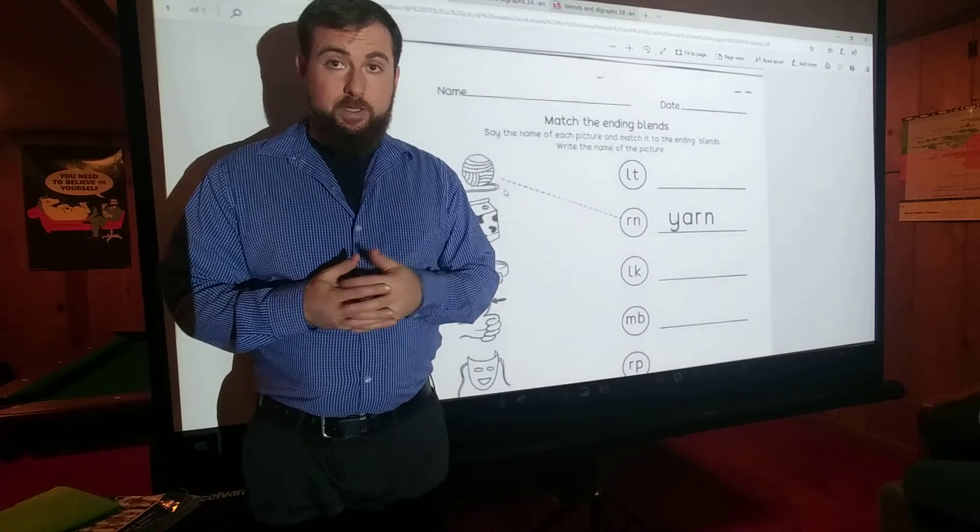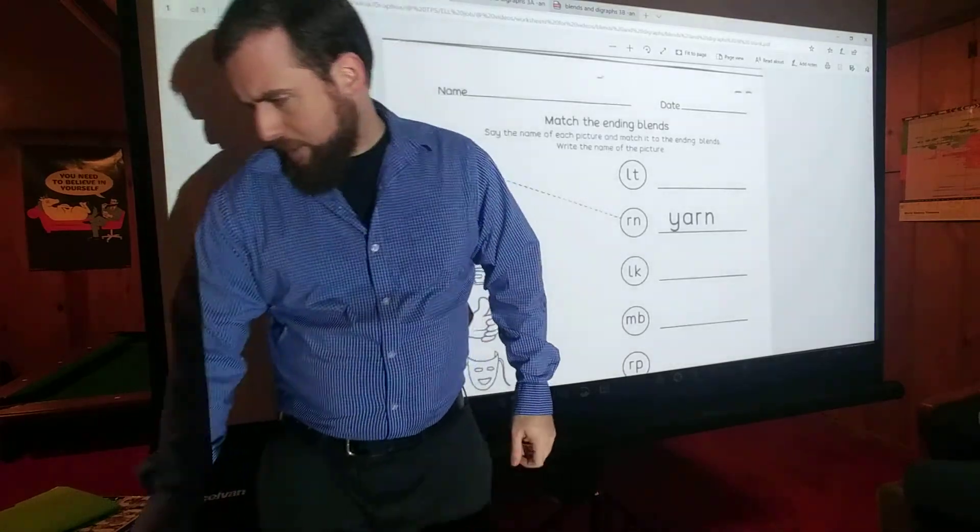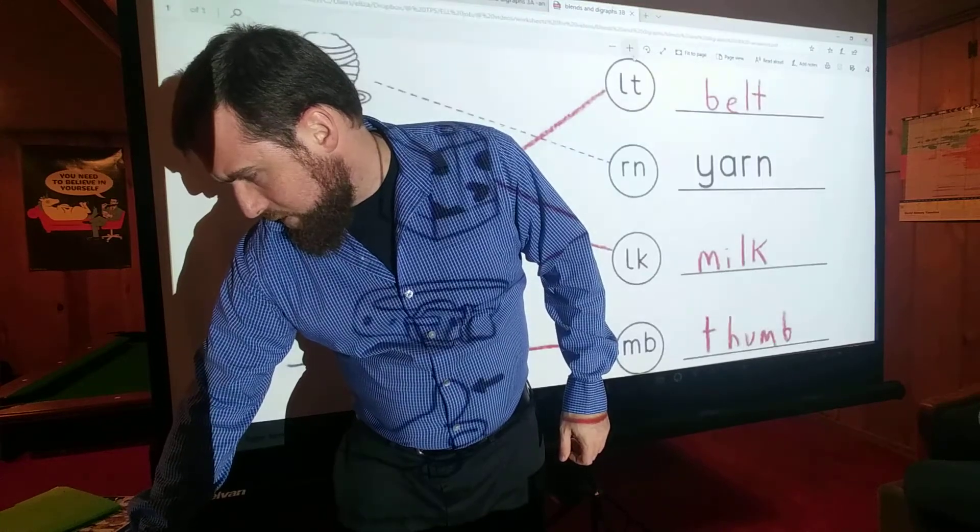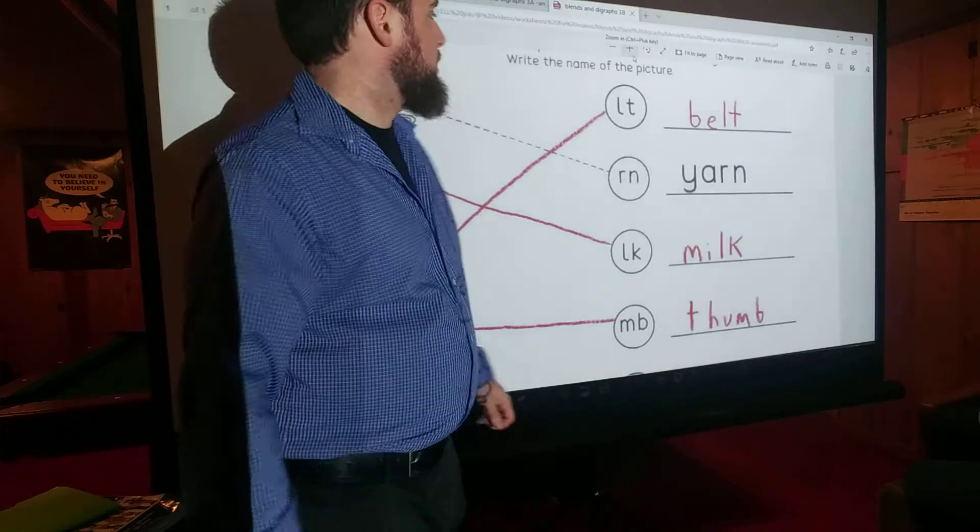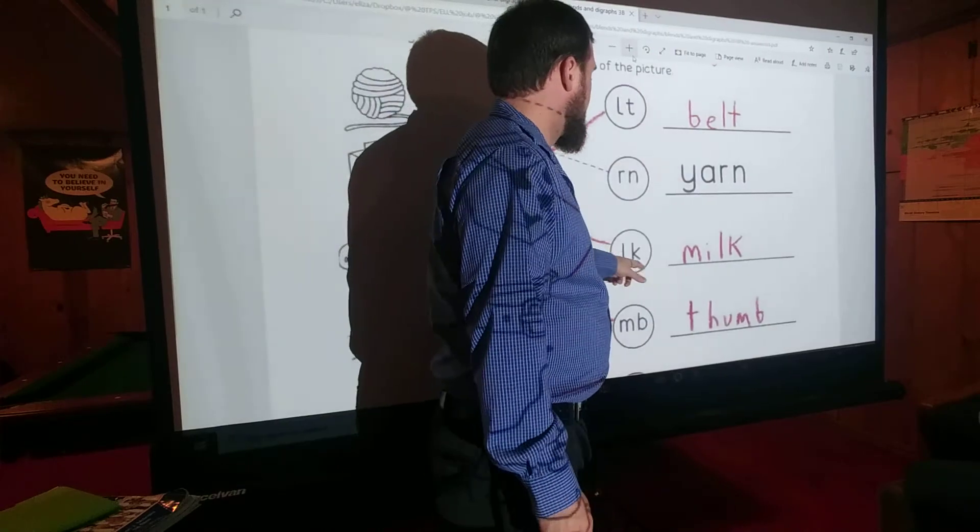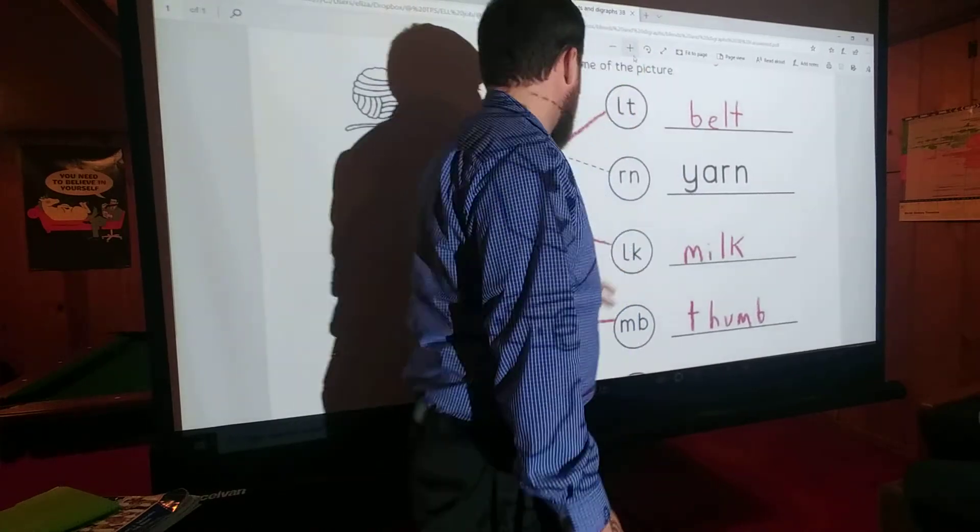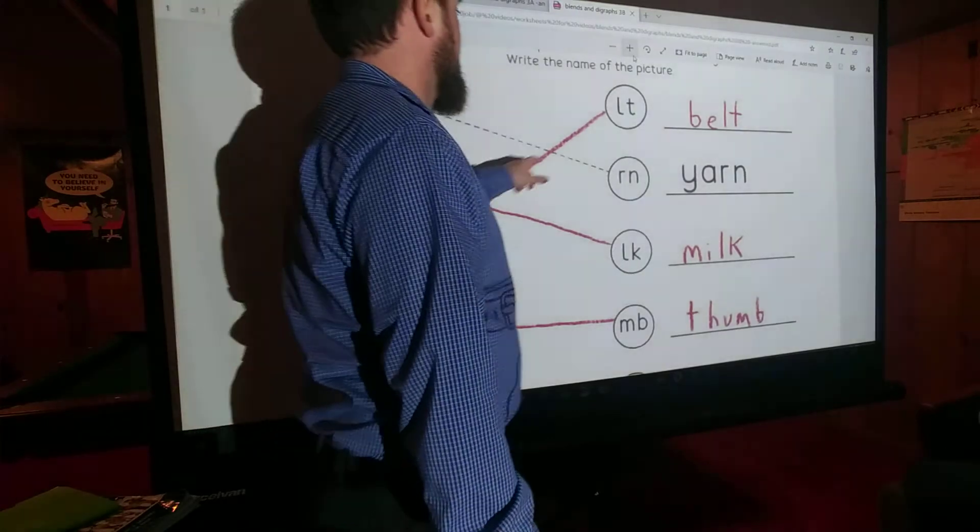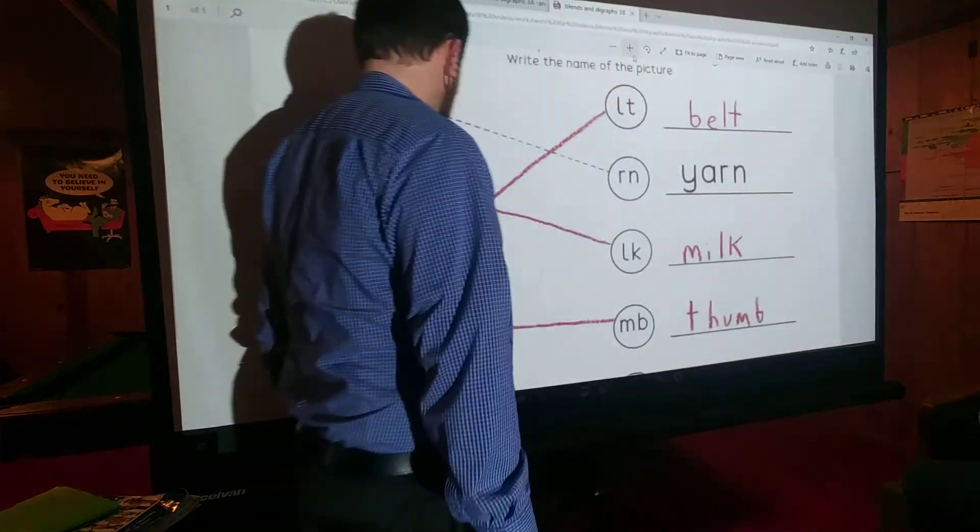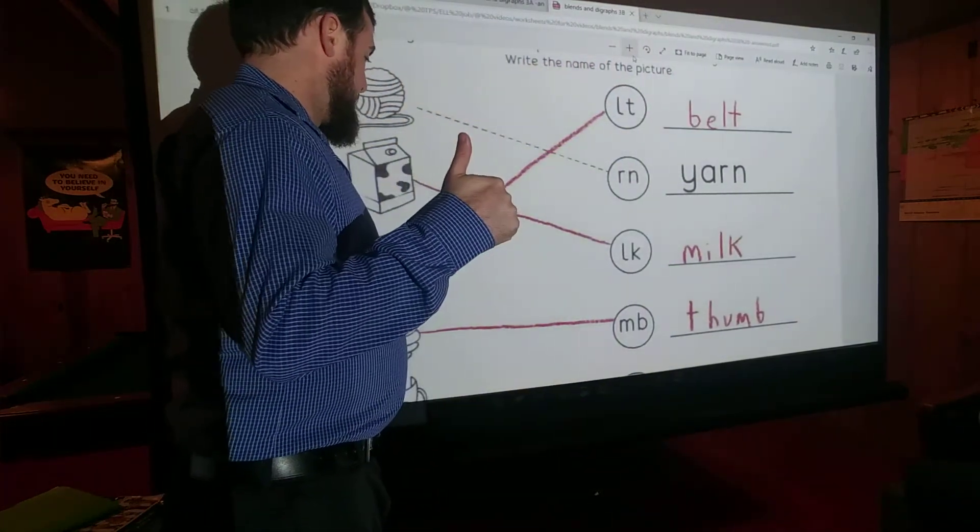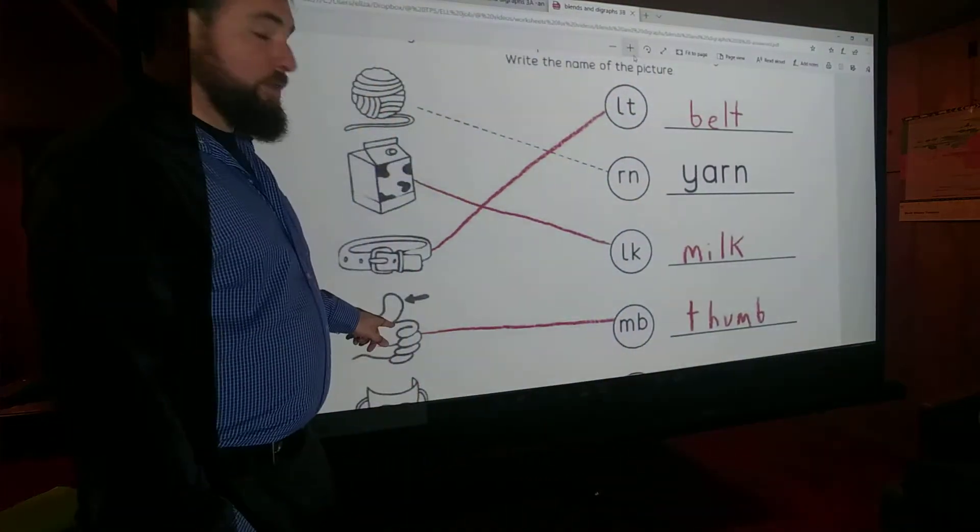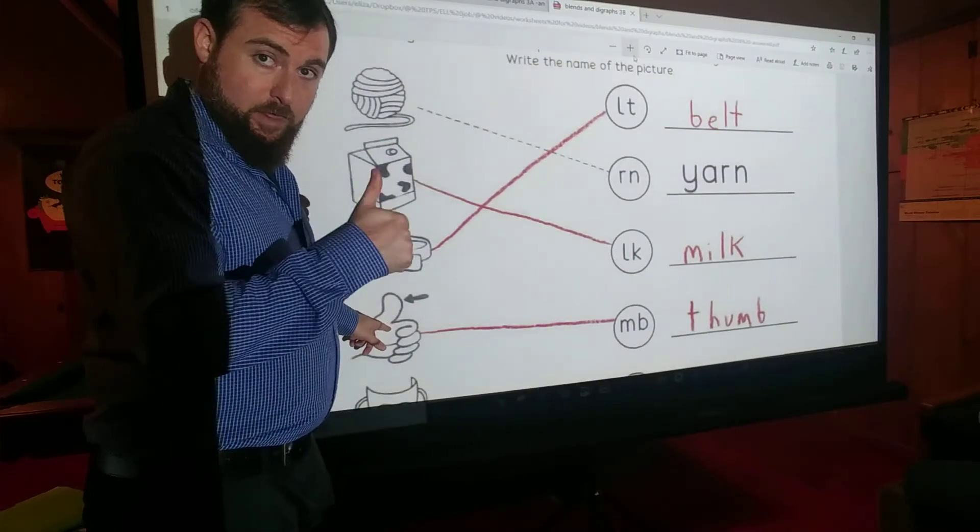Okay? Did you pause the video and complete the activity? Good. So now your completed activity should look like this. Milk - LK. Milk. Belt - LT. Belt. Thumb - MB. Thumb. Remember this word. We're going to talk about it again later. Thumb.